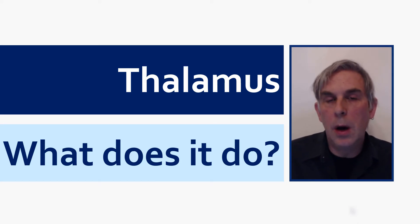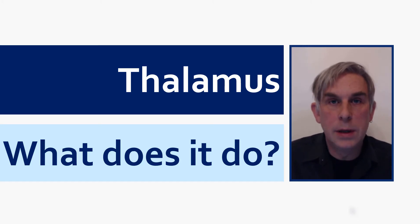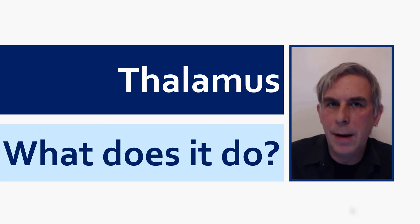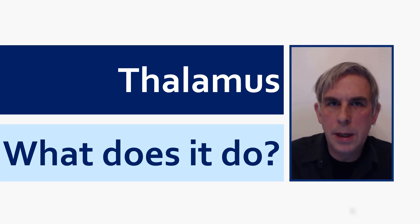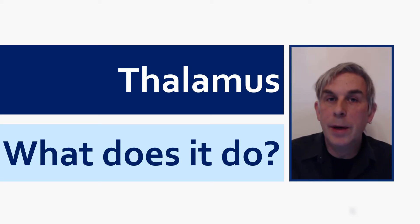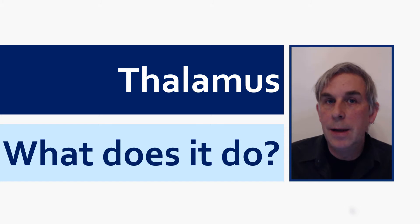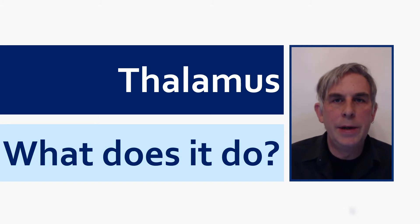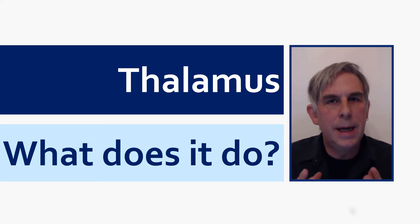This results in the so-called cocktail party effect. In a room with a hundred people all having conversations, you can focus on two or three people in front of you and filter everything else out. But if someone on the far side of the room says your name, you suddenly become aware of it. Your thalamus is filtering out irrelevant information while still monitoring all sensory input — when something salient comes through, it lets it up to the cortex.